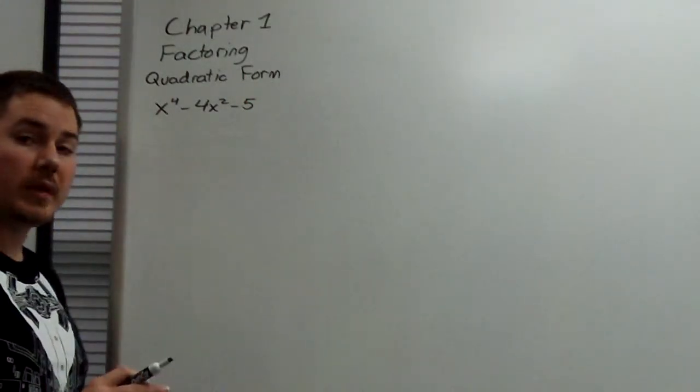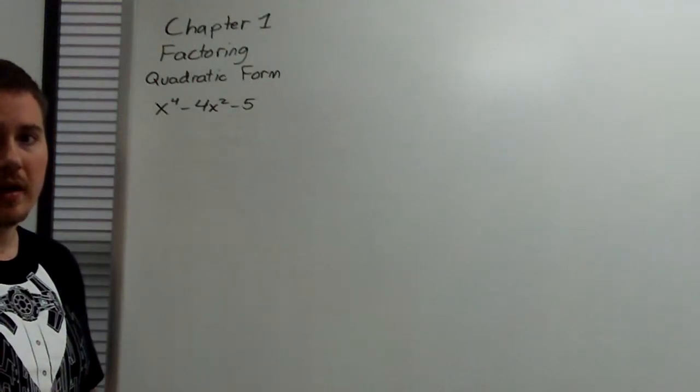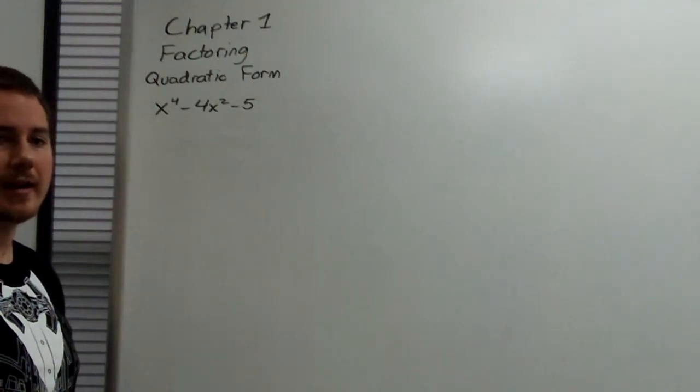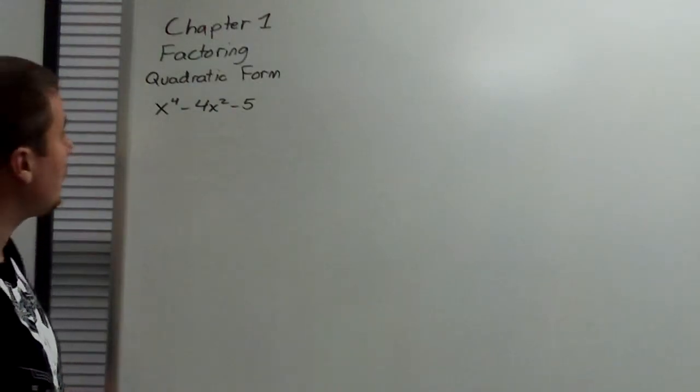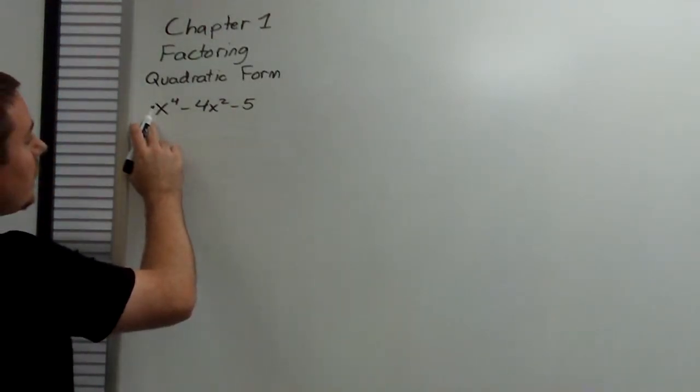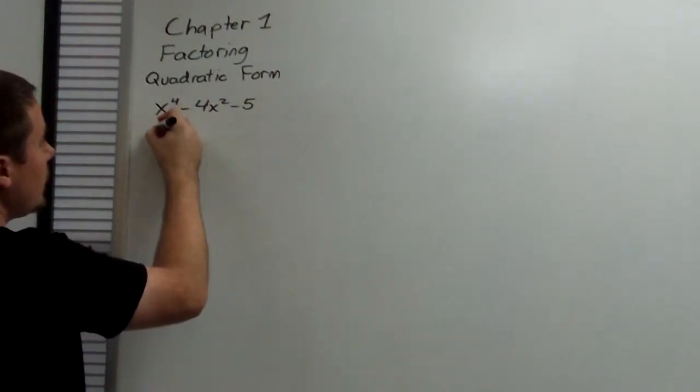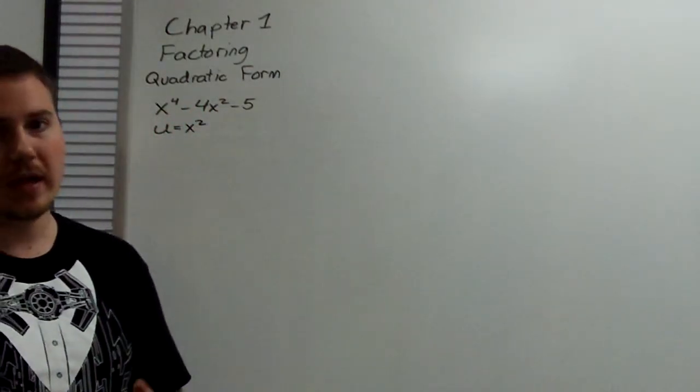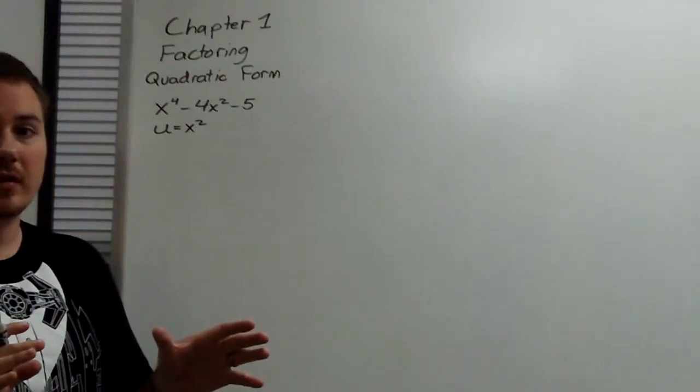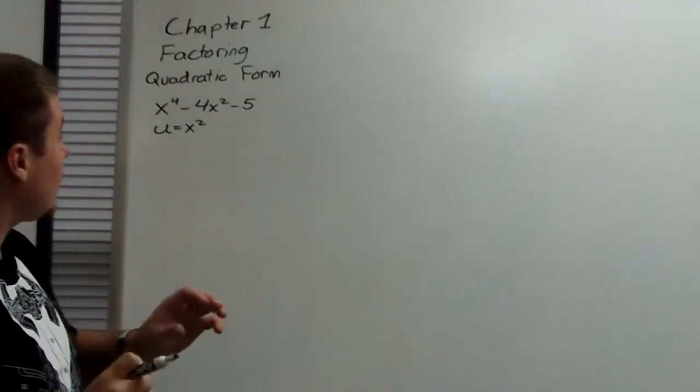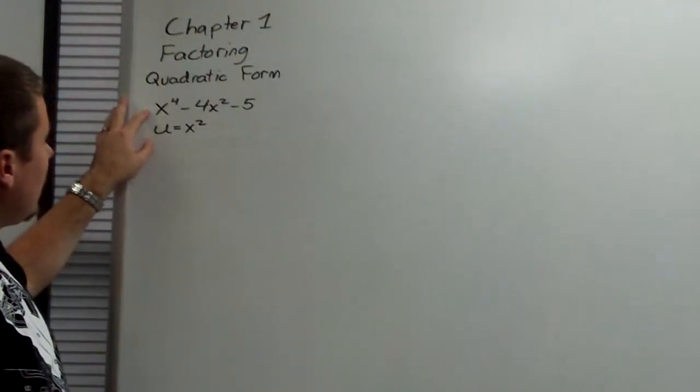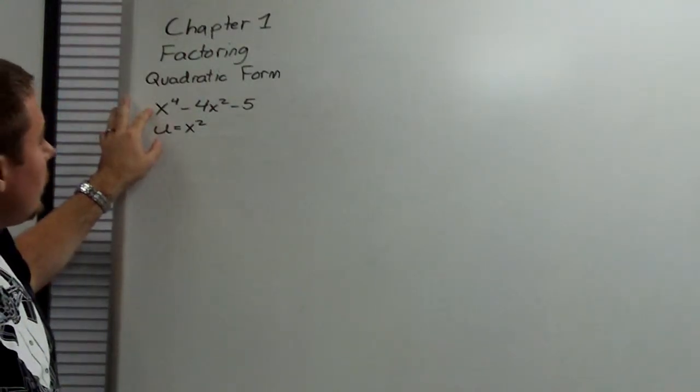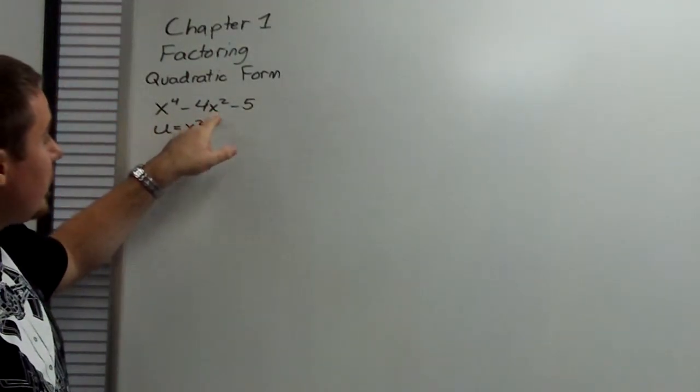So, what we can do is we can make a clever substitution that will turn it into a quadratic. Once we've turned it into a quadratic, we can factor it, hopefully. So, the clever substitution is u equals x squared. This isn't always going to be what you're going to use for your substitution, but it's what you need to figure out in order to turn this into a square, and this into a first degree.